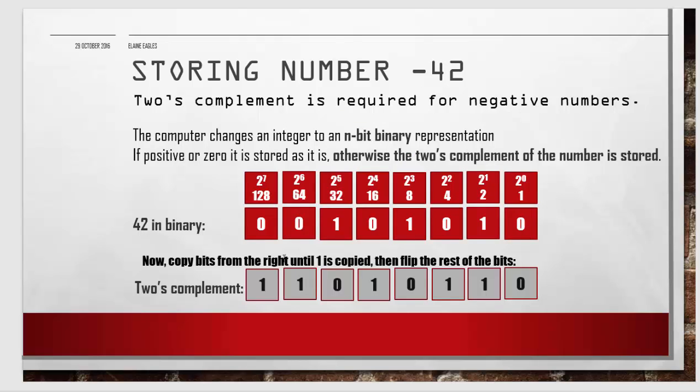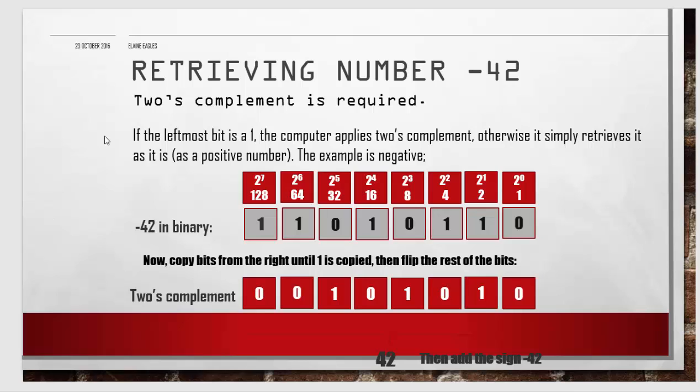With the minus number, again this is 42, but because it's a negative value it's stored in its two's complement form. Copy until the first one is encountered, copy that, and then reverse all the other values. That results in the leftmost bit being a one, storing minus 42.